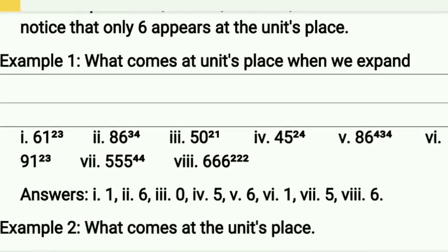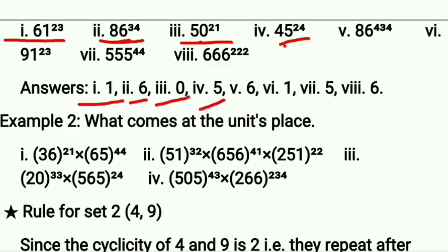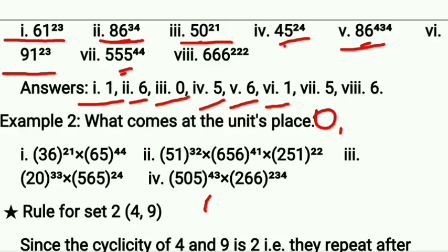Let's take a few examples. Find the unit digit when you expand these. First: 61^23 — unit place is 1, so the answer is 1. 86^34 — unit place is 6, so the answer is 6. 50 — unit place is 0, answer is 0. 45 — unit place is 5, answer is 5. 86 — unit place is 6, answer is 6. Similarly, 91^23 — it's going to be 1. No matter what power we have, if the unit place is 0, 1, 5, or 6, our answer will be that same digit.